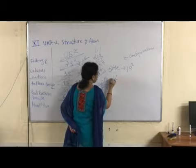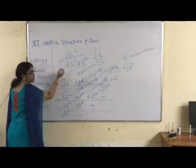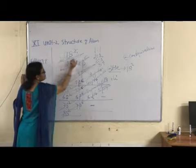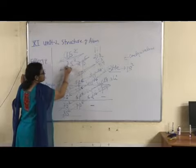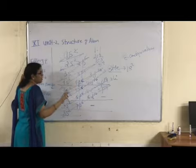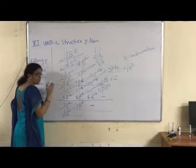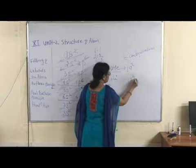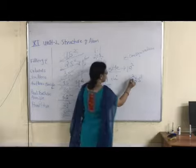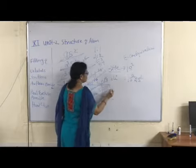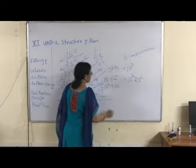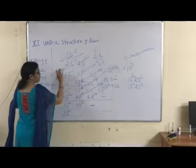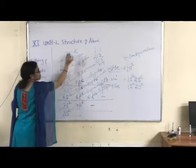For lithium, atomic number is 3. Always start from 1S. Configuration is 1S2, and then moving head to tail, the next subshell is 2S. Only one electron is placed in 2S. So the complete electron configuration of lithium is 1S2, 2S1 — and 2 plus 1 equals 3. For beryllium, atomic number is 4: 1S2, 2S2 — and 2 plus 2 equals 4.